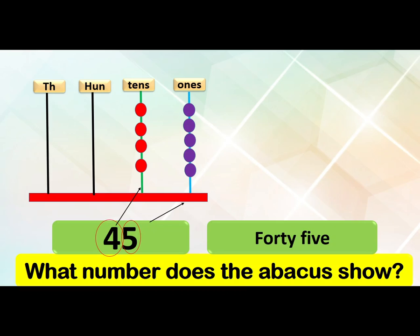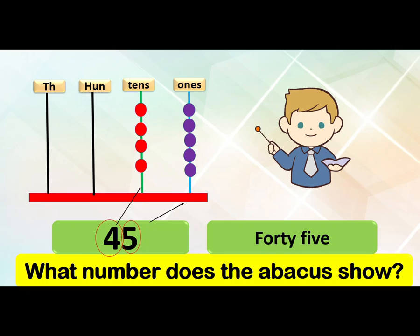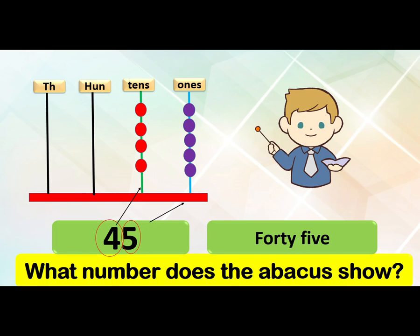This is forty-five — four tens, five ones. The abacus is an ancient device to help solve math problems. By moving the beads, people can add, subtract, multiply, and divide numbers.